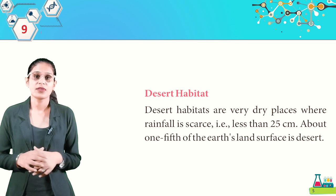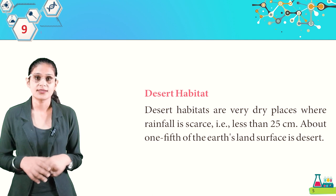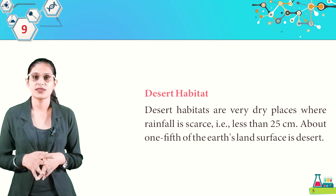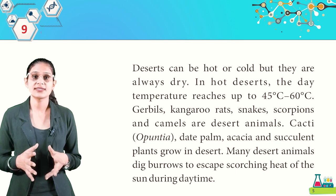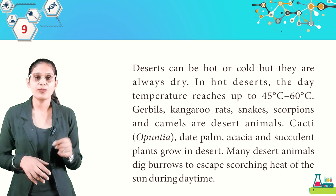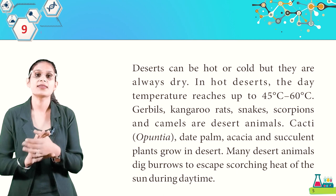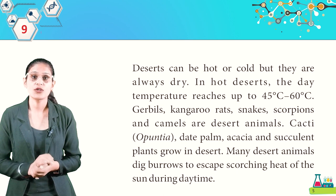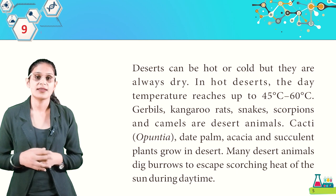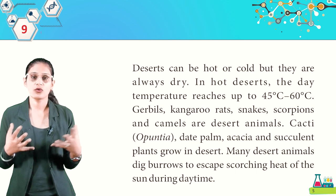Desert habitats are very dry places where rainfall is scarce — less than 25 cm. About one-fifth of the earth's land surface is desert. Deserts can be hot or cold but are always dry. In hot deserts, daytime temperature reaches up to 45°C to 60°C. Gerbils, kangaroo rats, snakes, scorpions, and camels are desert animals. Cacti, opuntia, date palms, and acacia are plants that grow in deserts. Many desert animals dig burrows to escape the scorching heat during daytime.